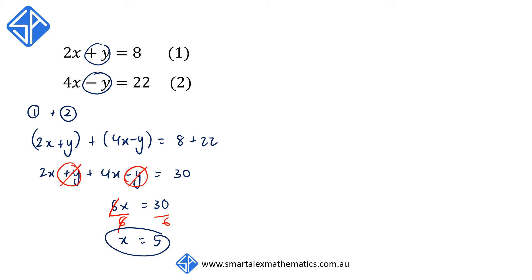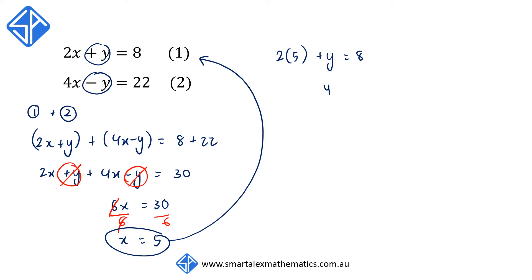After we get x is equal to 5, we need to find y, and we simply substitute x into any of the equations. Substituting back into equation 1, we replace x with 5, giving us 2 times 5 plus y is equal to 8. So we get y is equal to 8 minus 10, which is equal to minus 2. Therefore, the solution is x is equal to 5 and y is equal to negative 2.